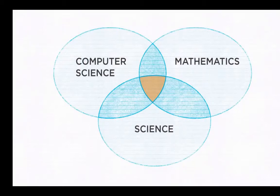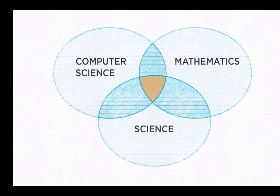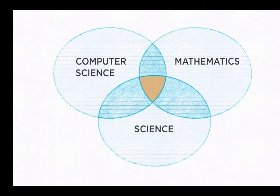In this video, we're going to explore computational science, a new type of science made possible by computers, and the impact it's having on our everyday lives. Computational science can be seen as the third leg of science, in addition to theoretical and experimental science. It lies at the intersection of computer science, mathematics, and science. Computational science uses mathematics and computer science to model real-world problems and conduct simulation experiments.